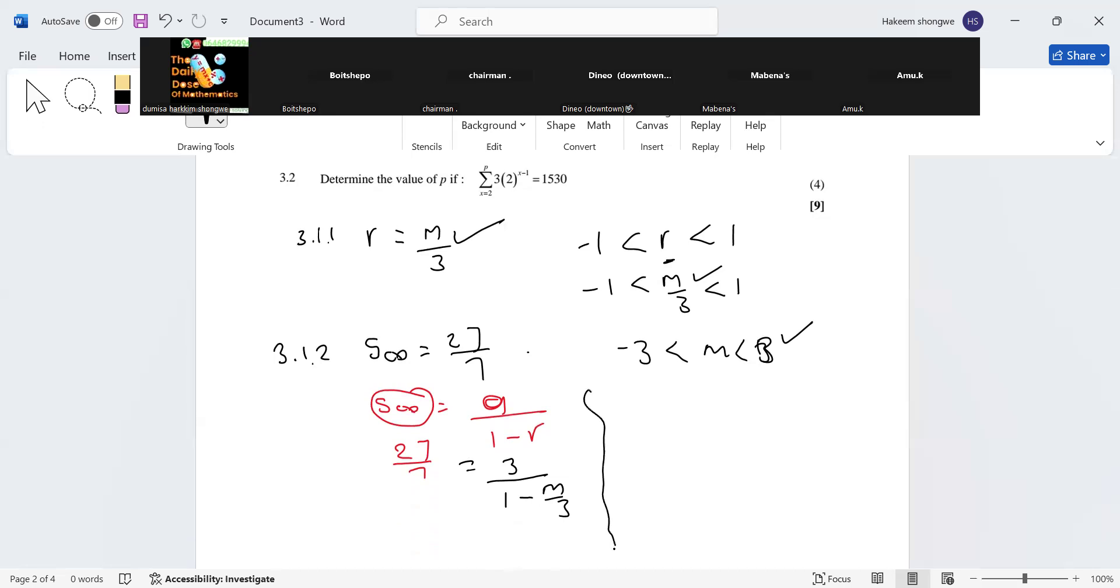Okay, what should we do here? We are going to cross multiply. Seven multiply by 3, 27 multiply. So you have 27 multiply by one minus m over 3, m all over 3. This is equaling to 21. Okay, and then let's divide, let's divide. If we divide both by 27, we have one minus m over 3, and we're just going to be equaling to 21 all over 27, which is 7 over 9.